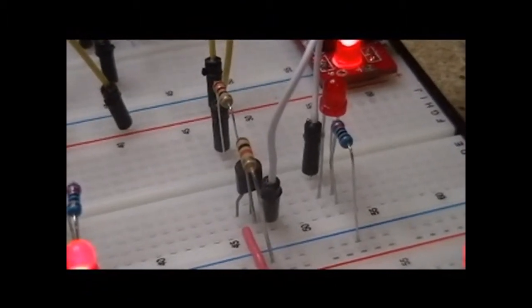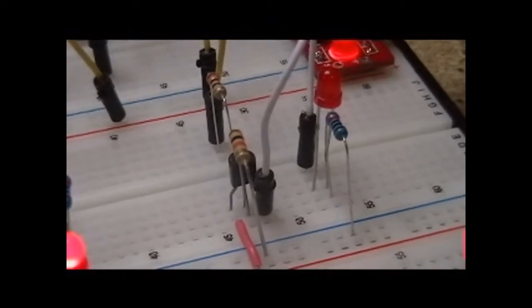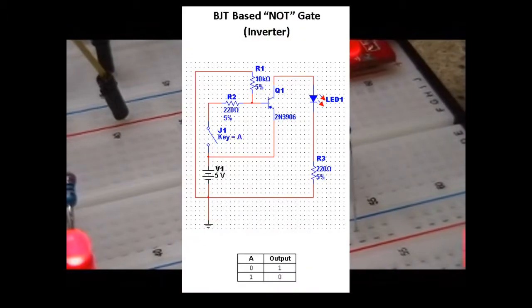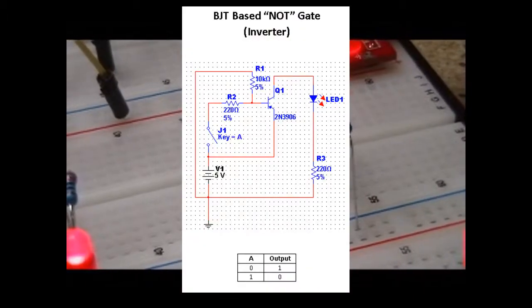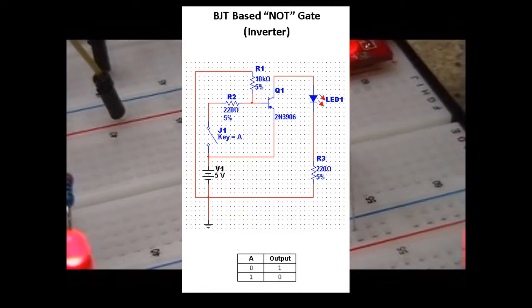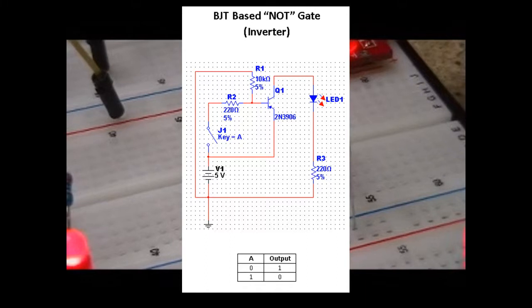Now, what I've done is I've put together a small schematic to show you what I'm looking at. What you'll see on here is the 5 volt supply, and you'll see the switch, which we're calling our input. That's our key, going through the 220 ohm resistor to the base of the transistor. You'll also see the 10k ohm resistor that comes off the ground.